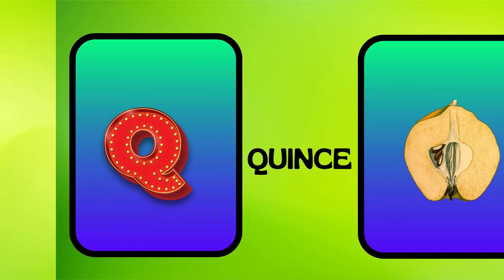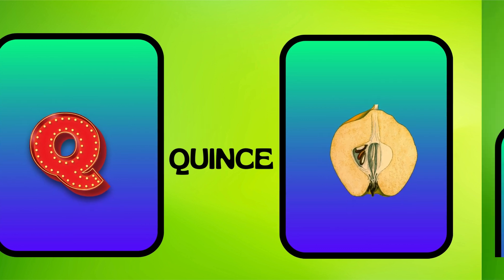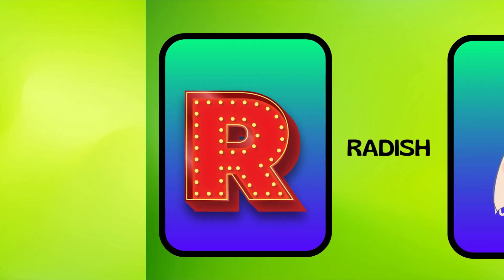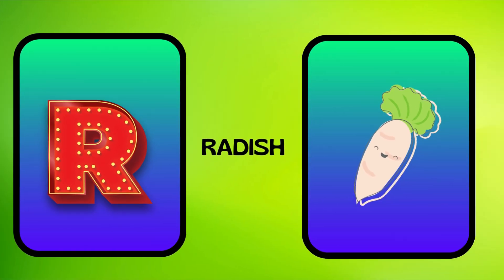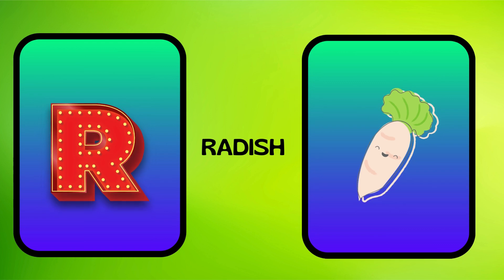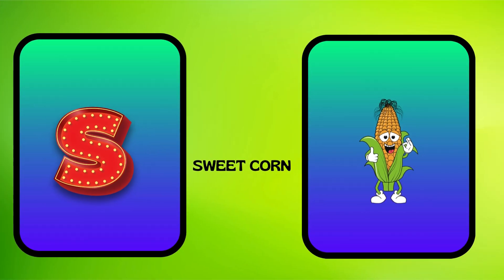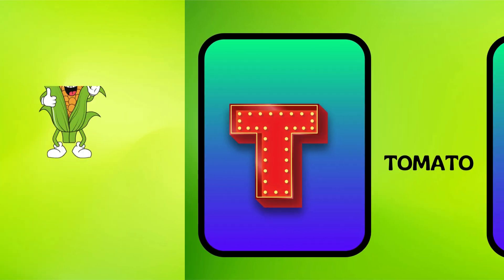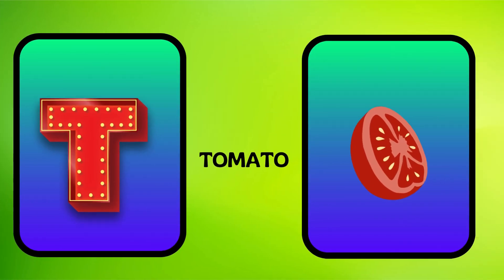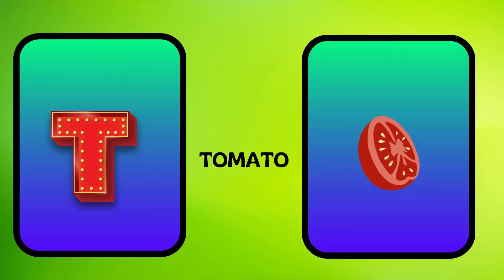Q is for quince, quh, quince. R is for radish, rr, radish. S is for sweet corn, suh, sweet corn. T is for tomato, tuh, tomato.